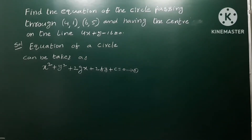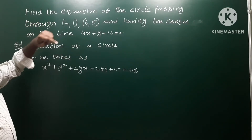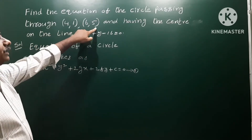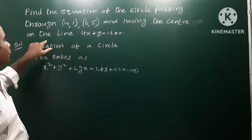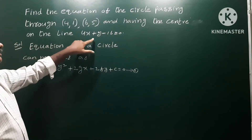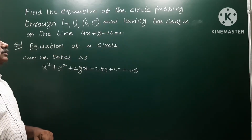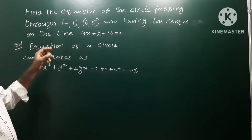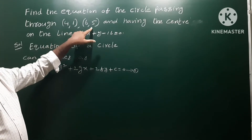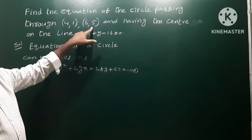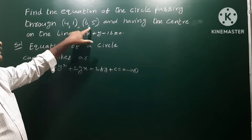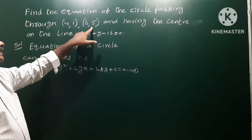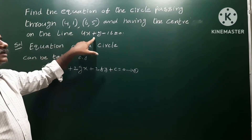Next problem: find the equation of circle passing through (4,1) and (6,5), and having the center on the line 4x plus y minus 16 is equal to 0. So, the circle equation is passing through these two points (4,1) and (6,5), and also the center of the circle lies on this line.